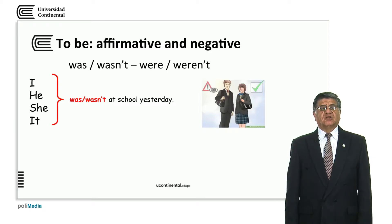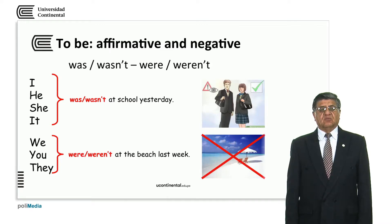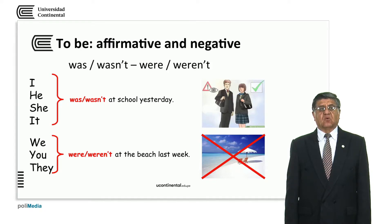I, he, she, and it are the singular forms that use 'was' in the affirmative. For example: I was at the school yesterday. She wasn't at the school yesterday. For plural subjects, we use 'were' or 'weren't': They were at the beach last week. We weren't at the beach last week. Was is the past form of am and is. Were is the past form of are.